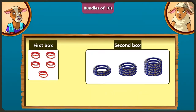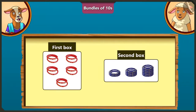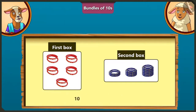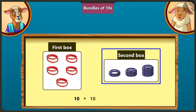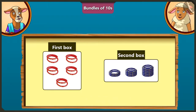Oh wow! Absolutely right! Now tell me, how many bangles are there in these two boxes? There are 10 bangles in the first box and 10 bangles in the second box. So if we add 10 and 10, there will be 20. There are total 20 bangles in these two boxes.